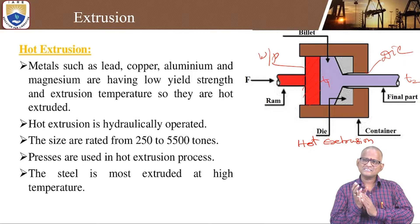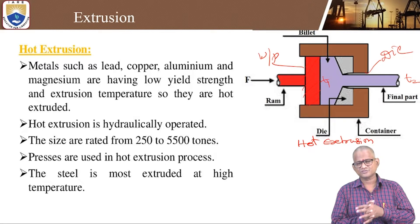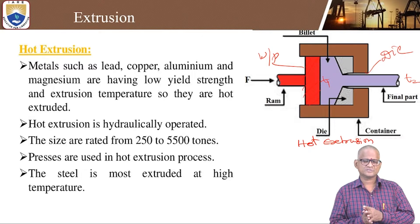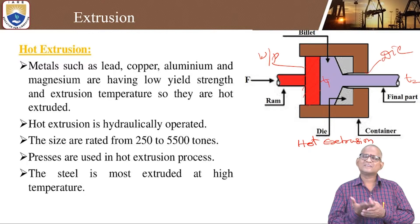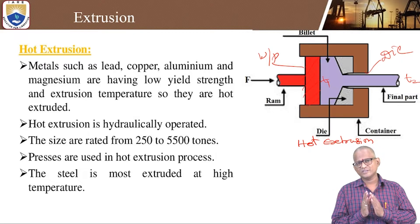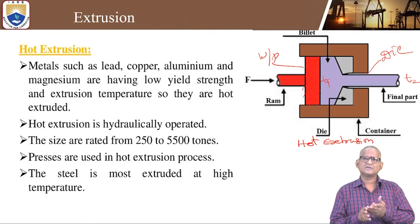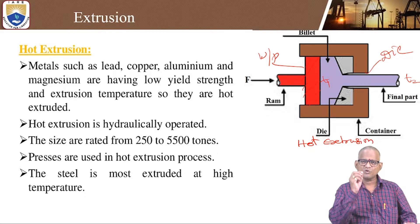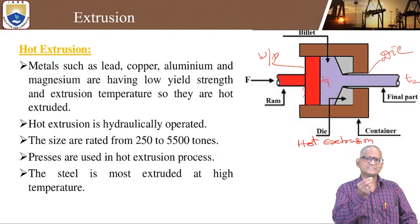Let us see the major principle involved in the hot extrusion process — how we can produce final components like billets formed into square rods and circular rods. In general, many ferrous and non-ferrous metals can be used to change shape and size. In this hot extrusion process, metals like lead, copper, aluminium, and magnesium have low yield strength, so they are hot extruded at relatively lower extrusion temperatures.